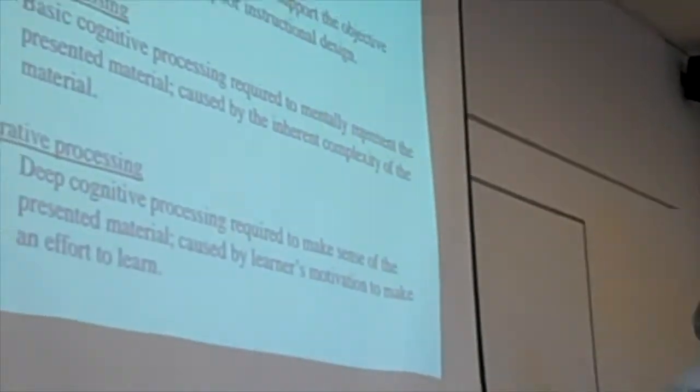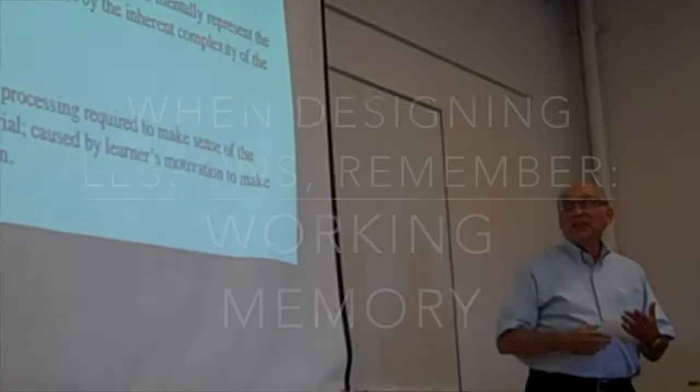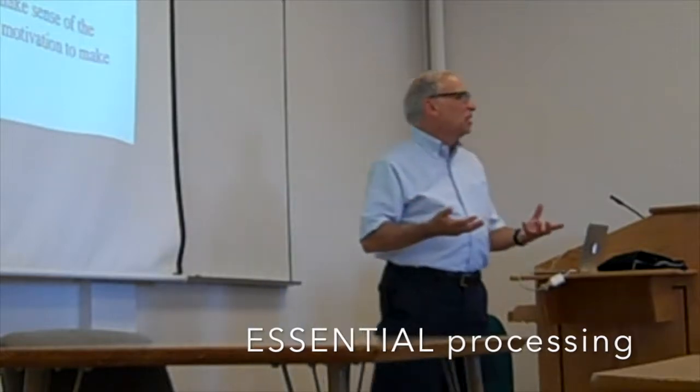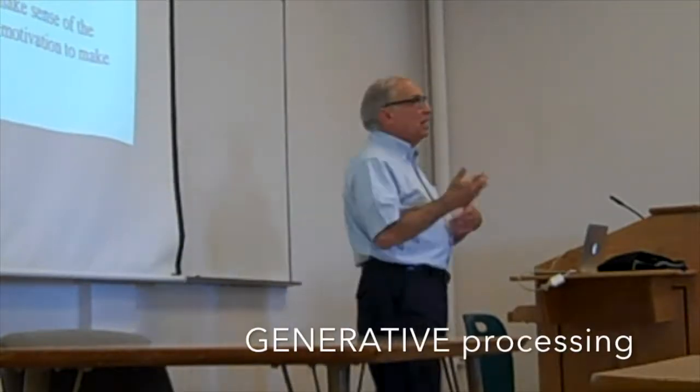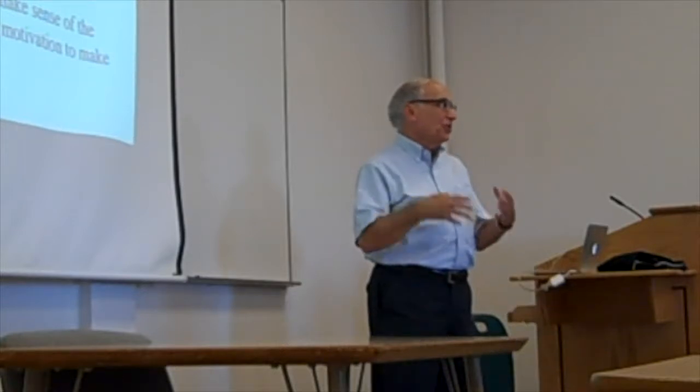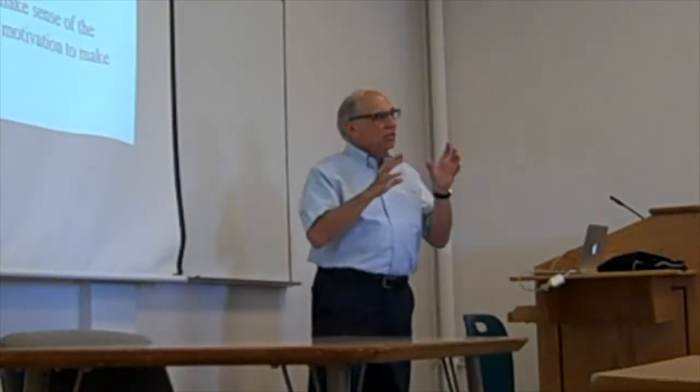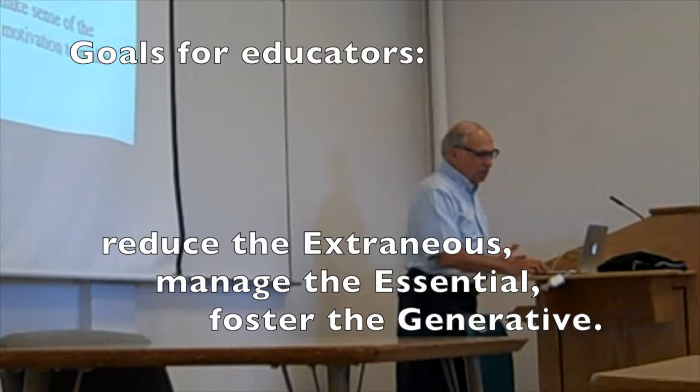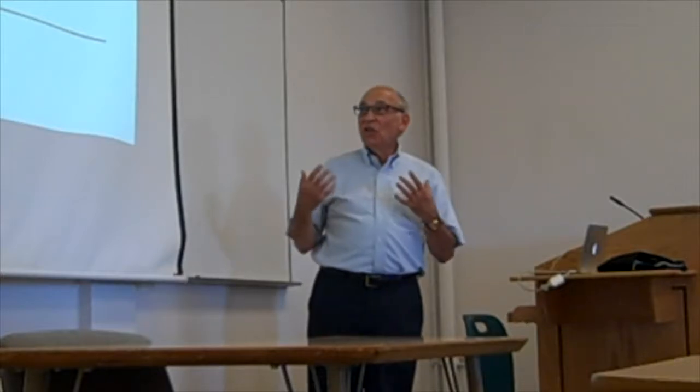There are three main issues if we're trying to design instruction. Given that we have limited processing capacity in working memory, it can be used for one of these three things. Extraneous processing—processing that does not support an instructional goal. Essential processing is really the selecting process, where you're not thinking much about it, you're just getting it in, representing it, and storing it. Generative processing is cognitive processing aimed at making sense out of the material, where you mentally reorganize it, relate it to your prior knowledge. You're actively trying to do it, so this is the deeper kind of processing that depends on your motivation. In any learning situation, our goals are to reduce extraneous processing, manage the essential processing, and foster generative processing.